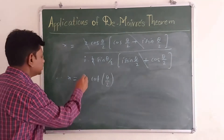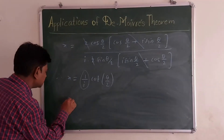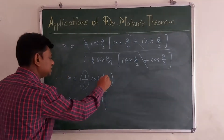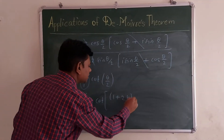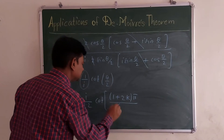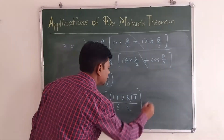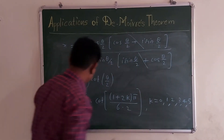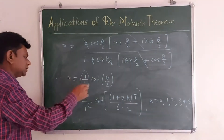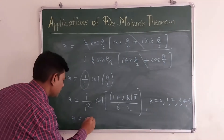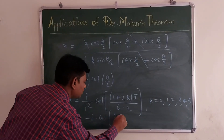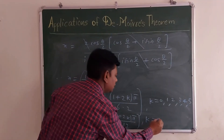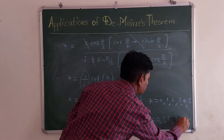Multiplying numerator and denominator by i, we write x as i/(i²) · cos((1+2k)π/12). Since i² = -1, the final answer is x = -i · cos((1+2k)π/12), where k = 0, 1, 2, 3, 4, and 5.